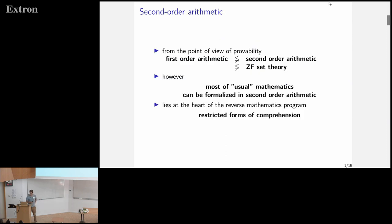First of all, why bother about second-order arithmetic? From a mathematical point of view, it's a very interesting theory because it's much stronger than first-order arithmetic. You can formalize many things and encode many structures using second-order quantifications. Yet it's not as powerful as full ZF set theory. But we usually say that most of what we call usual mathematics can be formalized entirely in second-order arithmetic. That's quite an interesting theory to study.